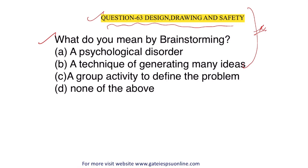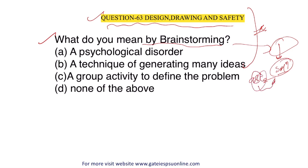First question: what do you mean by brainstorming? Brainstorming is basically when some problem is there and for that problem we need a proper solution. We hire a number of people — our employees — and ask for many ideas. For example, for one problem we got a hundred ideas, then we select the best idea to solve that problem. That is brainstorming.